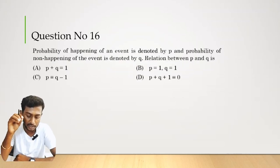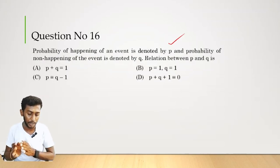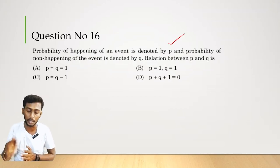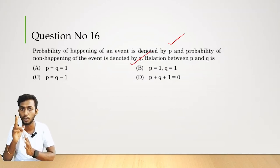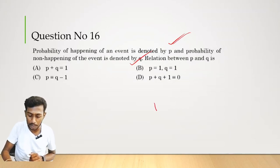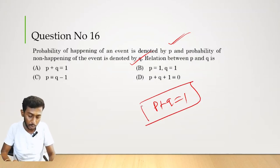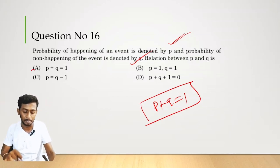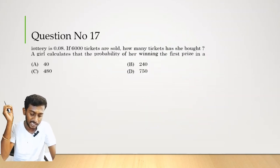Question number 16. The probability of an event happening is denoted by P, and not happening is denoted by Q. The sum of all probability values equals 1. Therefore P + Q = 1. Option A is the correct answer.